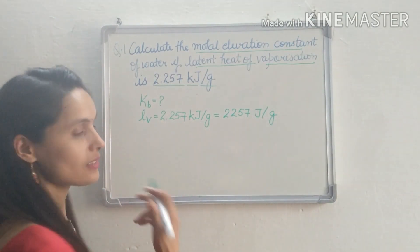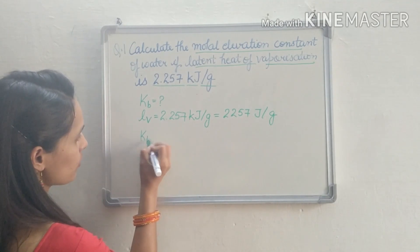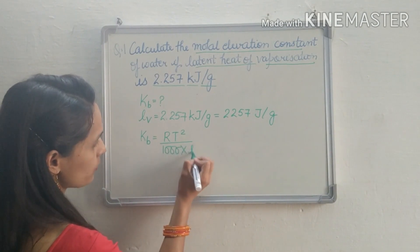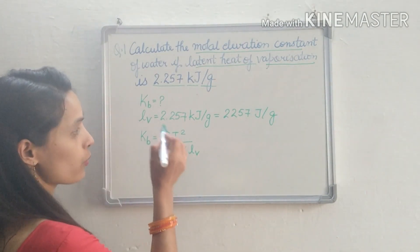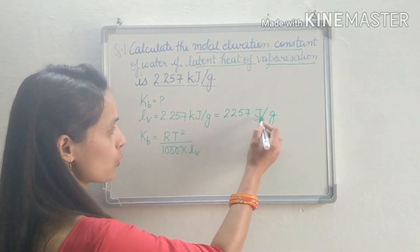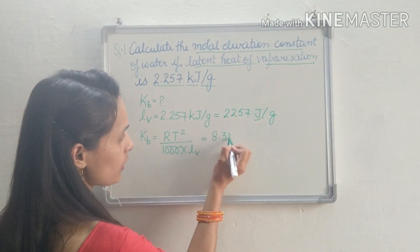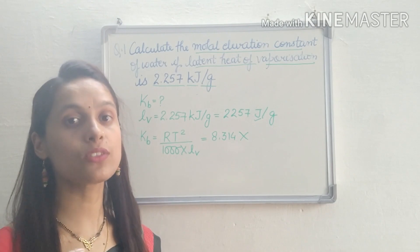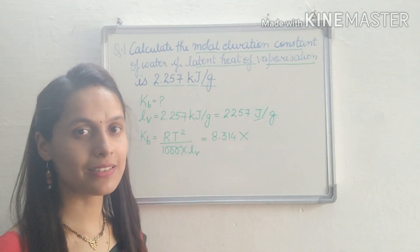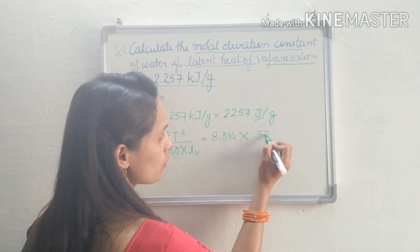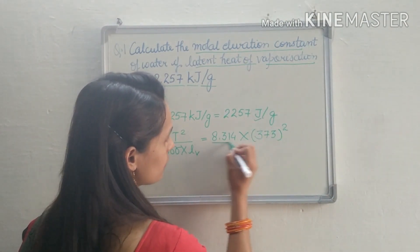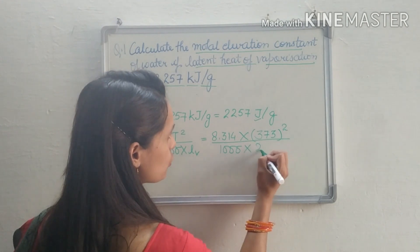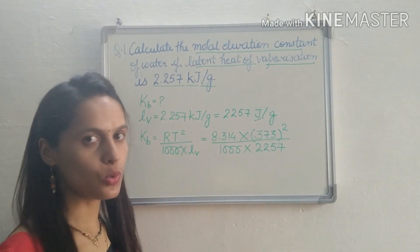The formula is: Kb = RT² / (1000 × Lv). Here, when Lv is taken in joules, the value of R is 8.314. T is the boiling point of the solvent — here the solvent is water, so the boiling point is 100°C, which means 373 K. So we have 373² divided by 1000 multiplied by Lv, that is 2257 J/g.